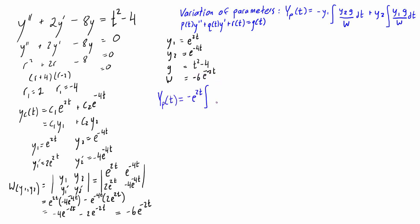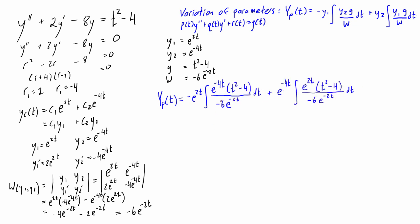Let's plug all of that into the expression. We can simplify each term a little bit by pulling out the factor of 1/(-6) and simplifying the exponentials. Now what we want to do is apply integration by parts to each term, one integral at a time.